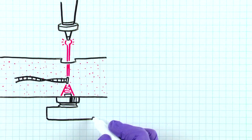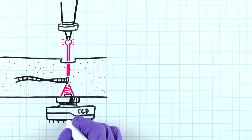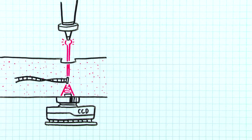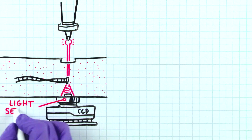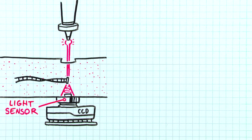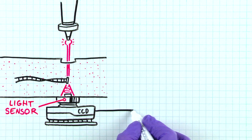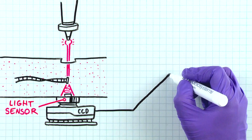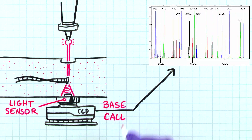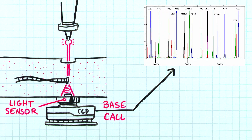The laser beam causes the dyes on the fragments to fluoresce at different emission wavelengths. A CCD camera detects the fluorescence, and the fluorescence intensities are digitalized, color-coded, and displayed as peaks in the electropherogram.